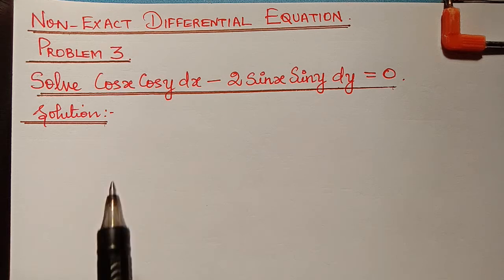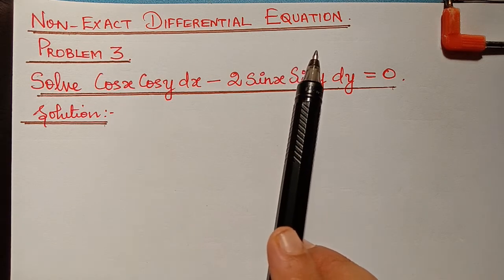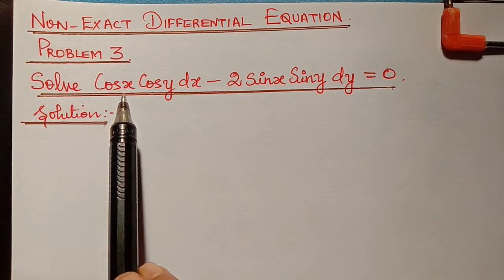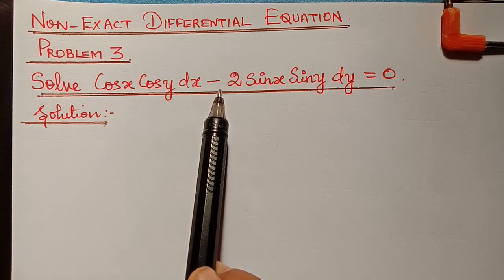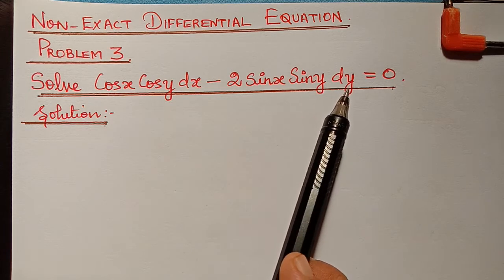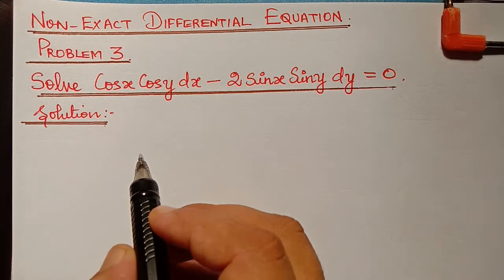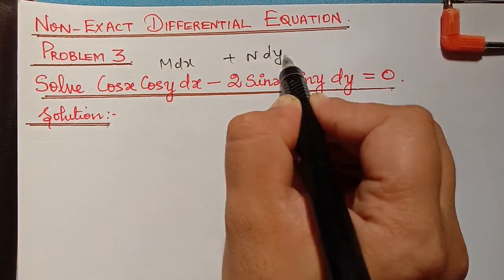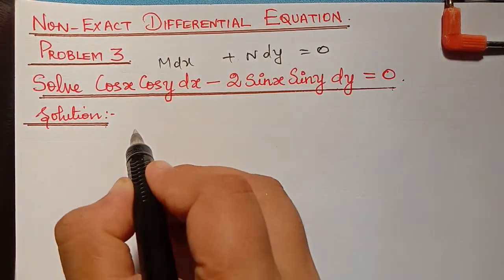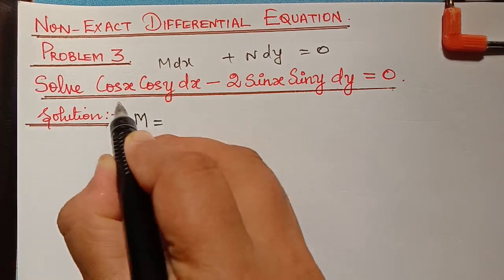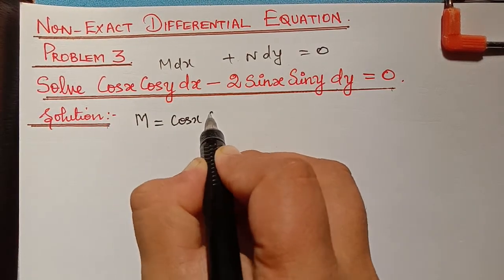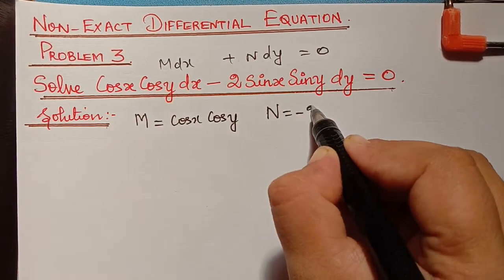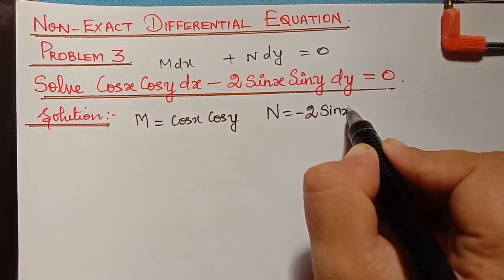Hello students. Under the topic non-exact differential equations, we are going to solve problem 3. Solve: cos x cos y dx minus 2 sin x sin y dy equals 0. This equation is of the form M dx plus N dy equals 0, where M equals cos x cos y and N equals minus 2 sin x sin y.